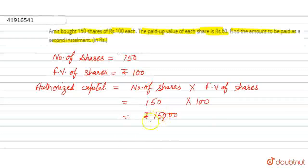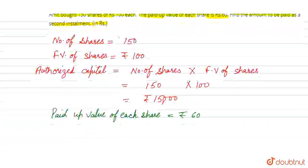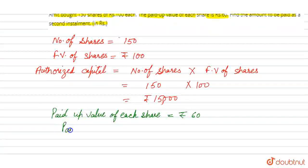That is our authorized capital. Now paid up value of each share is also given to us. That is equal to rupees 60. We have number of shares and paid up value, so we can find paid up capital.